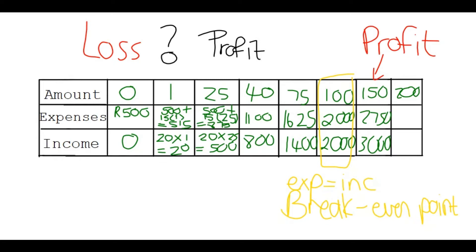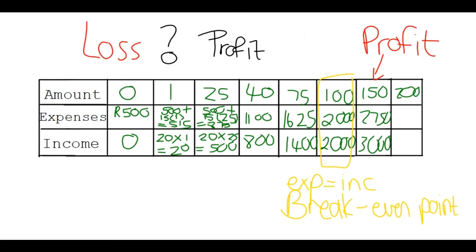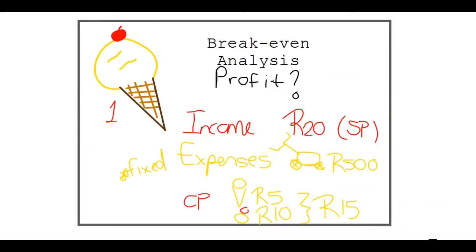Now, the next thing is, you can be asked to sometimes draw a graph. Here at the bottom on the x-axis, I'm going to say, this is my number of ice creams, then my amount in rands. I have the income, I'm going to use yellow, and expenses, I'm going to represent that with red. What I need to do is get a scale going. Let's look at the amount, the rands. If you look at the amount of rands here, it's like 500s, 800s, 1000s, 1400s, 2000s. So, I'm thinking I want to make my scale something to do with 200s. And if I do 200s, I see I'm going to have to go up to at least 2000.